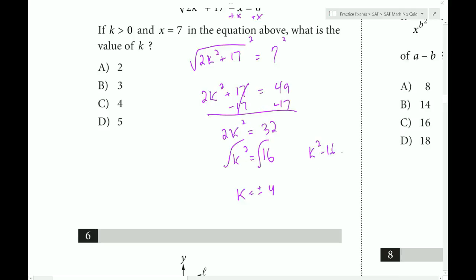Alternatively, you can solve via difference of two squares factoring: k plus 4 times k minus 4 equals 0. That's another option if you don't like remembering the plus or minus. The answer is plus 4.